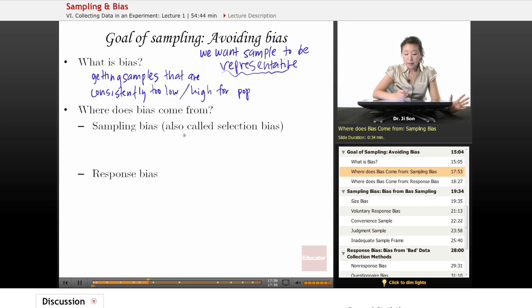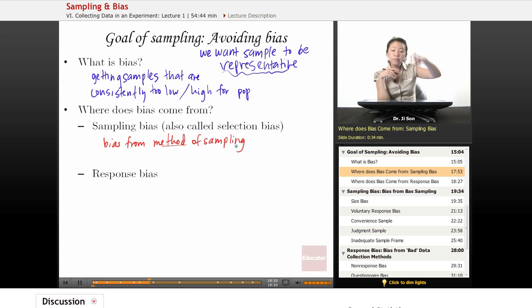So where does the bias come from? Well, the one that I mentioned is that bias can come from the actual sampling method. Bias from method of sampling. And what we mean by that is that your actual method of picking the sample is somehow biased, and I'll give you some examples in the next slide.